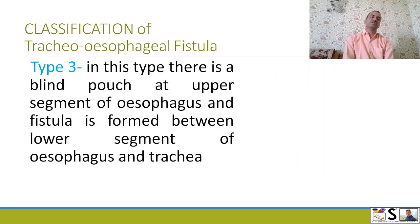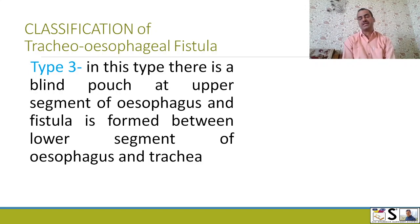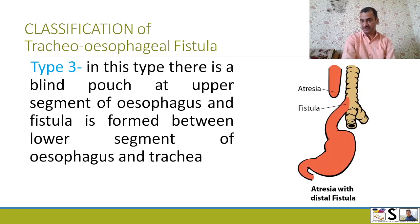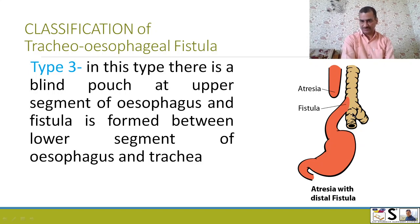Next is Type 3. In this type, there is a blind pouch at the upper segment of the esophagus, and the fistula is formed between the lower segment of the esophagus and the trachea. The upper blind pouch is here, and the lower part of the esophagus is attached to the trachea. This is Type 3.